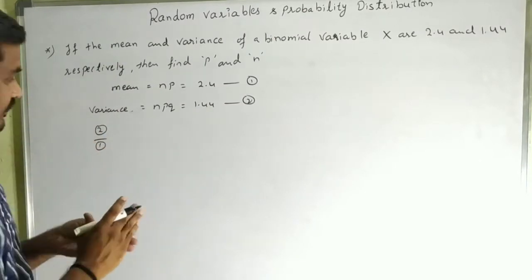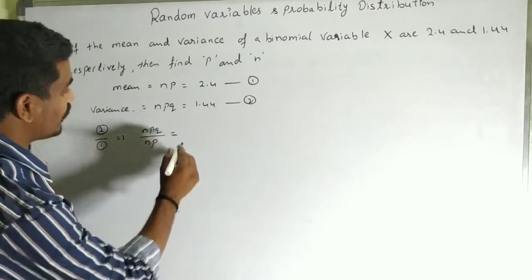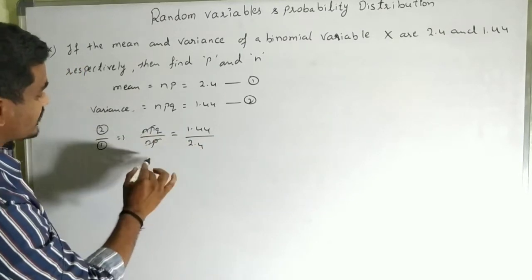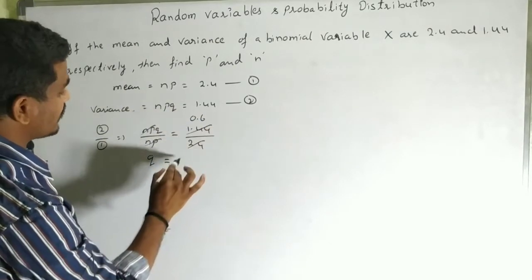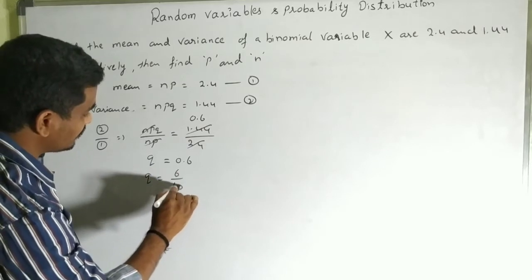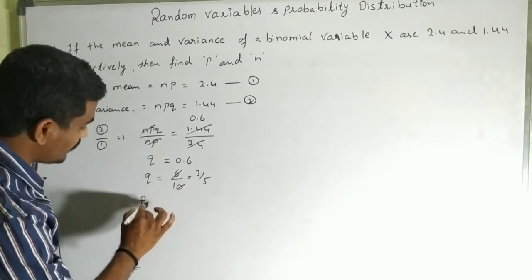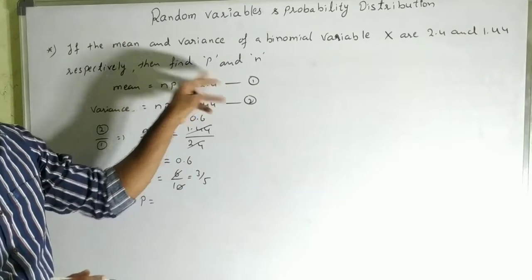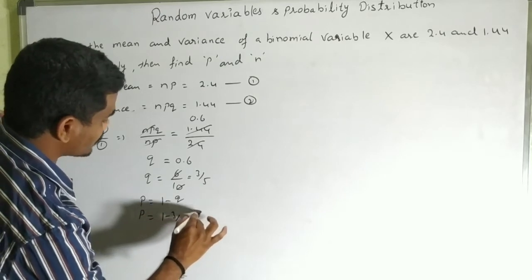Dividing equation 2 by equation 1: npq / np = 1.44 / 2.4. The np cancels, giving q = 0.6 = 6/10 = 3/5. Since p + q = 1, we get p = 1 − q = 1 − 3/5 = 2/5.